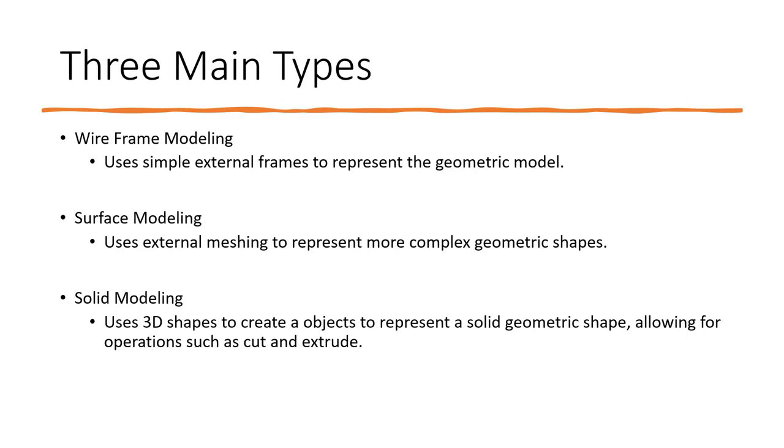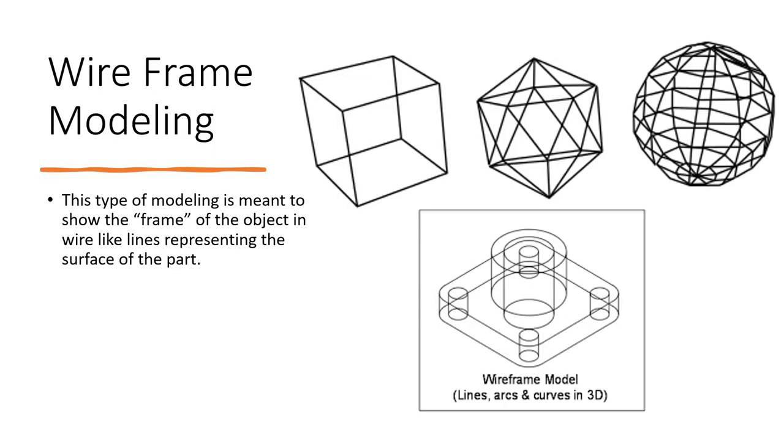Wireframe: a couple examples over on the right. This type of modeling is meant to show the frame of the object in wire-like lines representing the surface of the part. You can think of CAD 3D in a way. Essentially, you're trying to make a drawing in three-dimensional space of all the important features of the part.